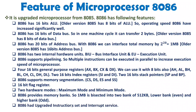The instruction set of 8086 has been upgraded by a huge amount. With 8086, there are many instructions not available with 8085 — for example, multiplication, division, string operations, and code conversion with ASCII. Almost all instructions from 8085 are also available in 8086, plus many new ones.